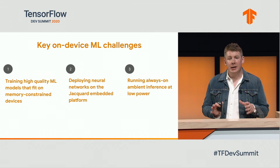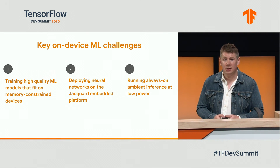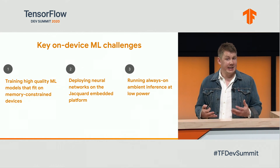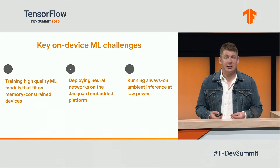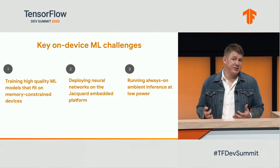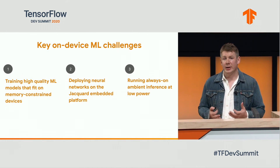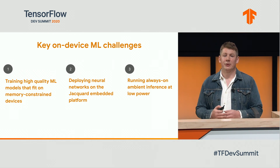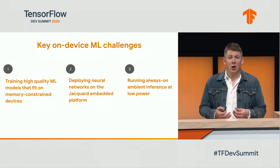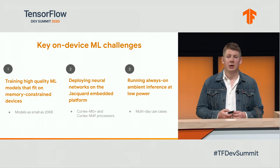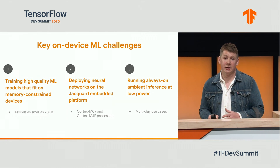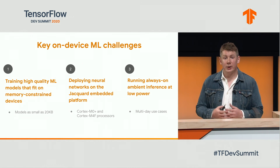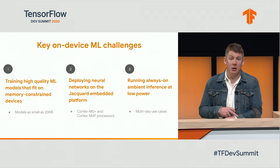First: how can we train high-quality ML models that can fit on memory-constrained devices? Second: assuming we have a TensorFlow model small enough to fit within our memory constraints, how can we get it running on low-compute embedded devices for real-time inference? Third: even if we solve problems one and two, it won't be a great user experience if the user has to keep charging their jackets or backpacks every few hours. So how can we ensure the ML model is always ready to respond while still providing multi-day experiences on a single charge? For Jacquard, these challenges map to deploying models as small as 20 kilobytes, or running ML models on low-compute microprocessors like a Cortex-M0+, which is embedded here in the cuff of the jacket.